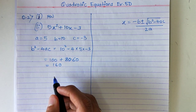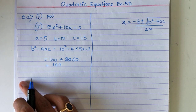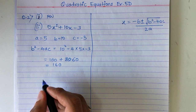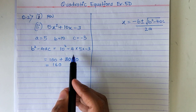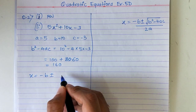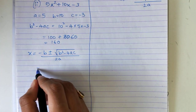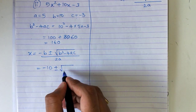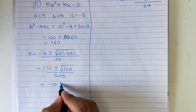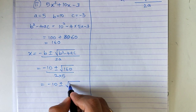Once we have the value of b squared minus 4ac, I will use the big formula. You have to mention the formula every time. So: minus 10 plus minus root of b squared minus 4ac, which is 160, upon 2a which is 5.